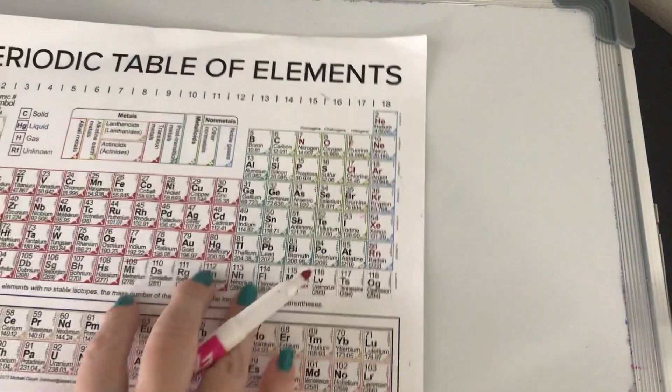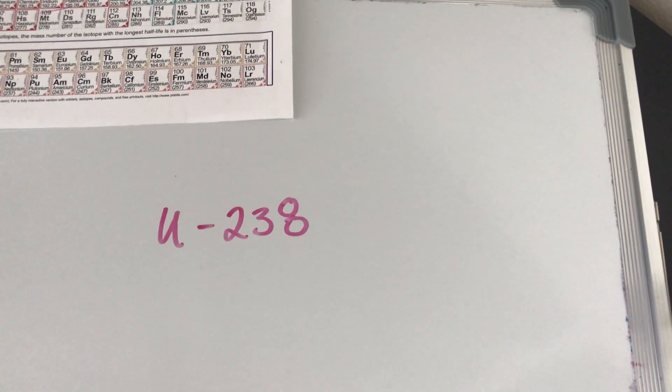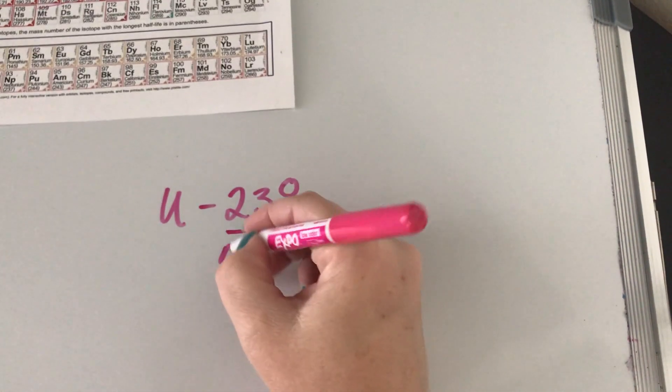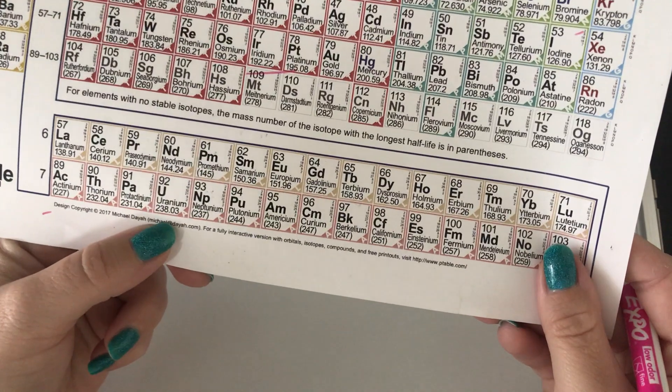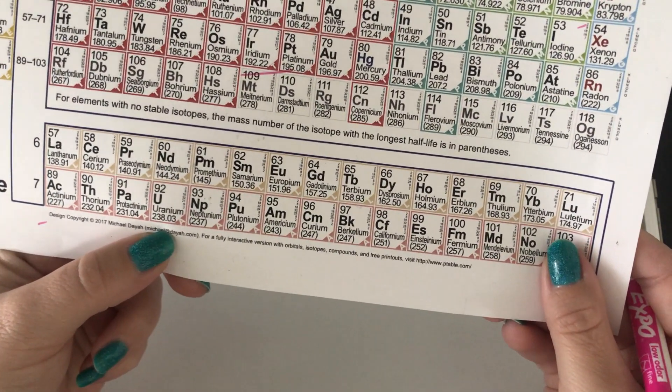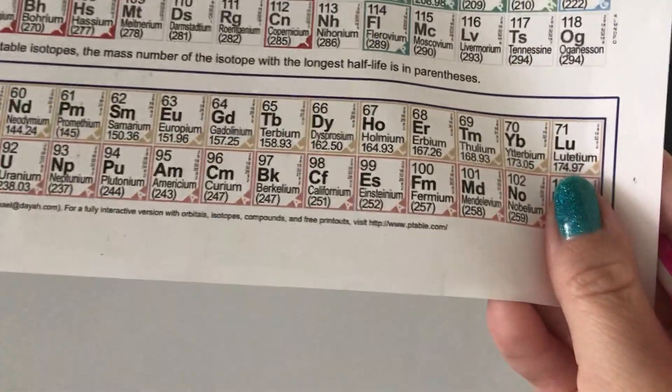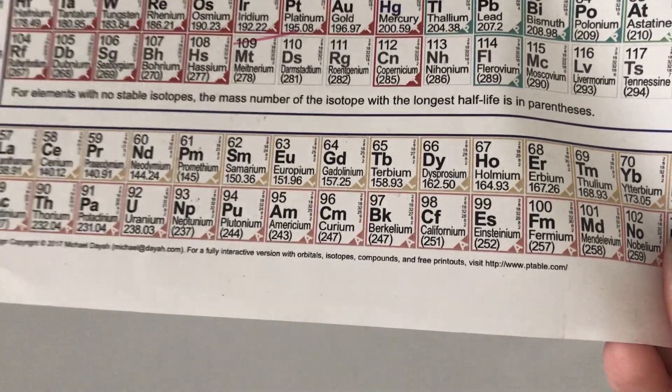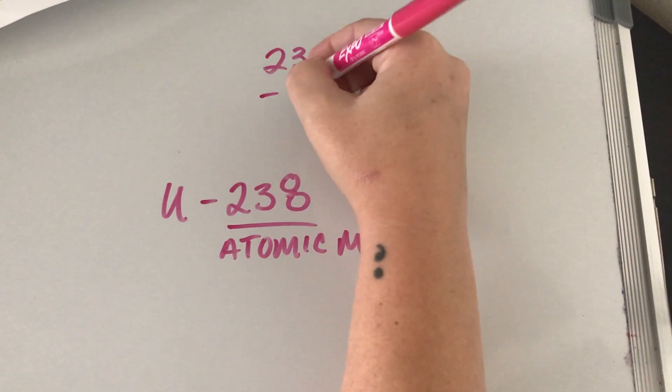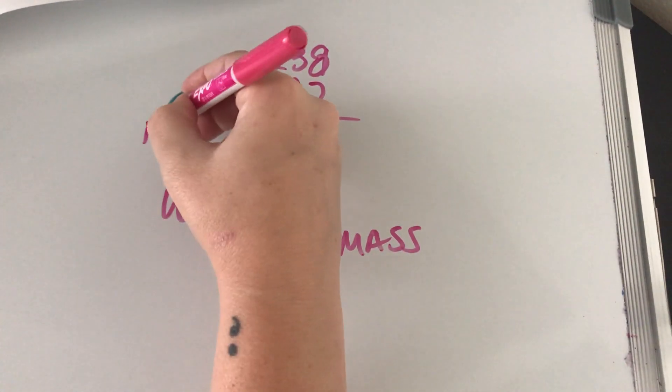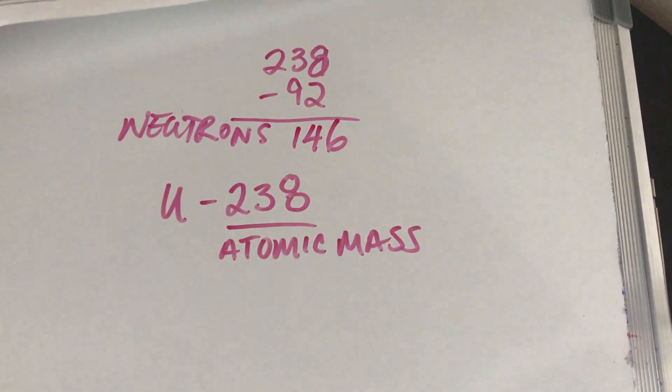So, for example, I could have uranium-238. This would be the atomic mass, and we can see, looking at uranium, that the atomic weight is close to that. But it's not the same thing. And again, that's because there are different isotopes of uranium. So this is the atomic mass, and we know what the atomic number is, which is 92. Then we can take 238 minus 92. And how many neutrons do we have? 146. Is everybody comfortable with that?